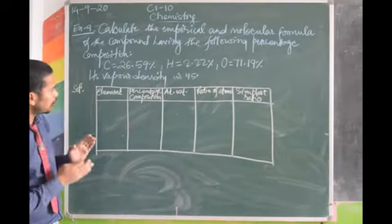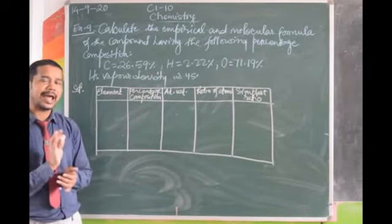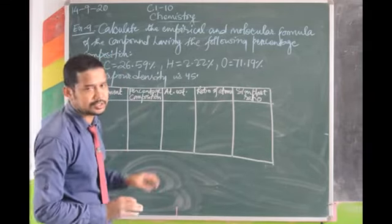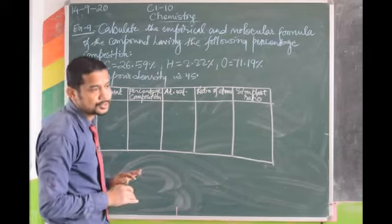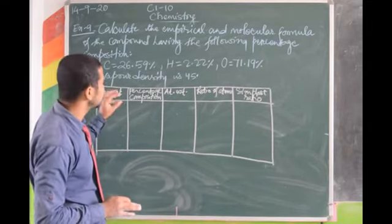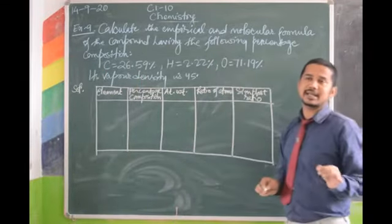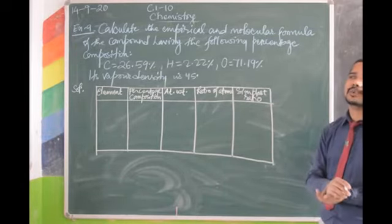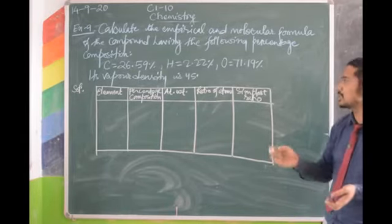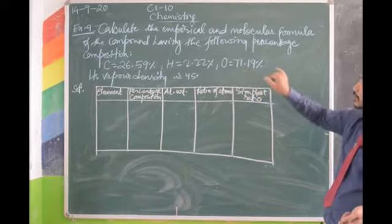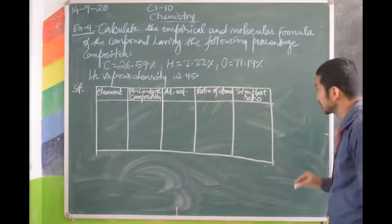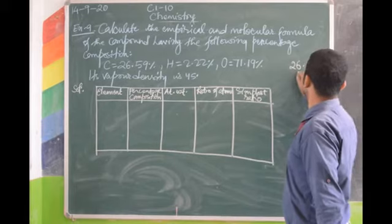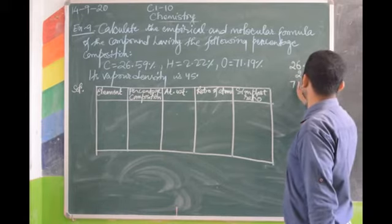Before doing this, your primary duty is to add all the percentages. If you get 100%, then it's okay; otherwise something is missing. The element whose percentage is generally not given could be carbon, hydrogen, or oxygen. Here all three are given. So: 26.59 + 2.22 + 71.19 = 100%. Everything is accounted for.